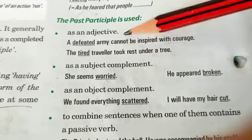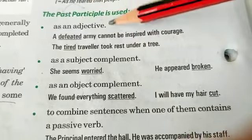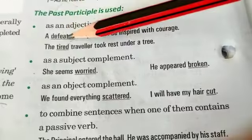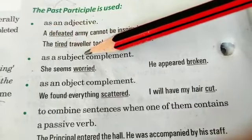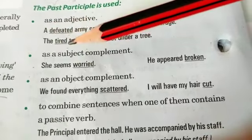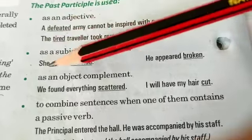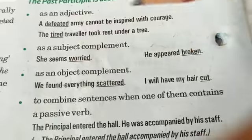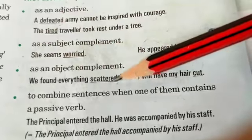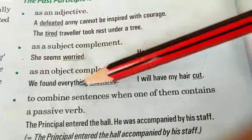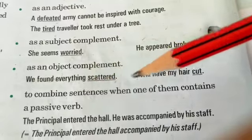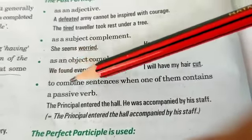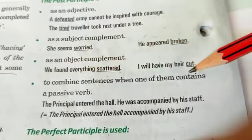Past participle is used as an adjective, like 'a defeated army' or 'a tired traveler' — these are third forms of the verb. It also works as a subject complement, like 'she seems worried' or 'he appeared broken,' and as an object complement, like 'we found everything scattered.'